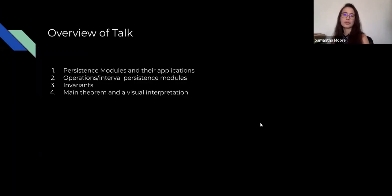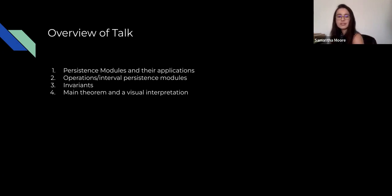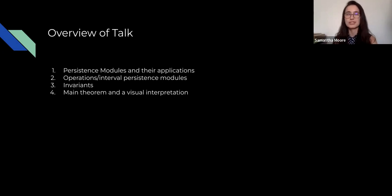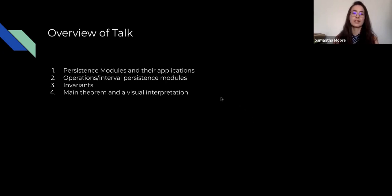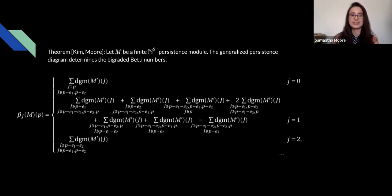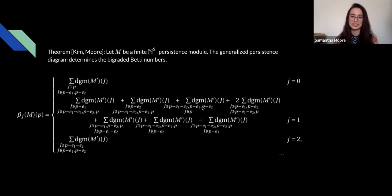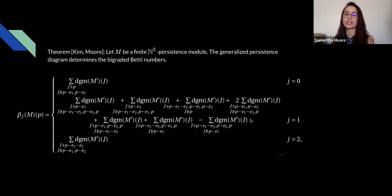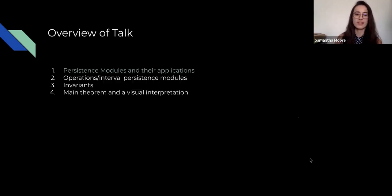Here's a little overview of the talk. We'll start with persistent homology, persistence modules and their applications, then get into operations and specific types of persistence modules. Then we'll discuss the invariants that are the focus: the generalized persistence diagram, the bi-graded Betti numbers, and the generalized rank invariant. Finally, we'll cover the main theorem and a visual interpretation of it.